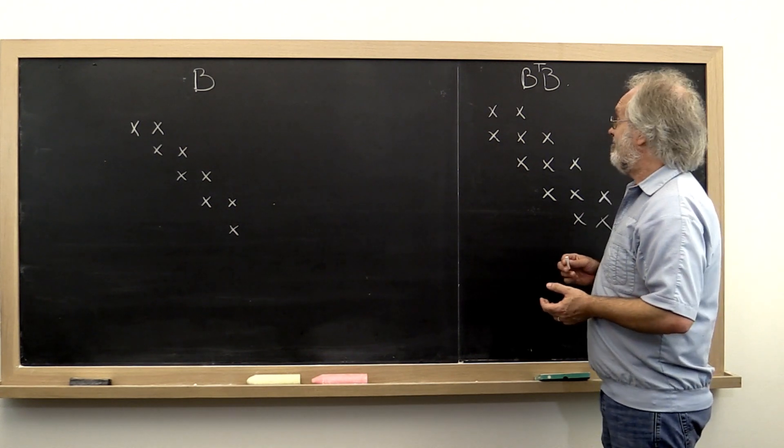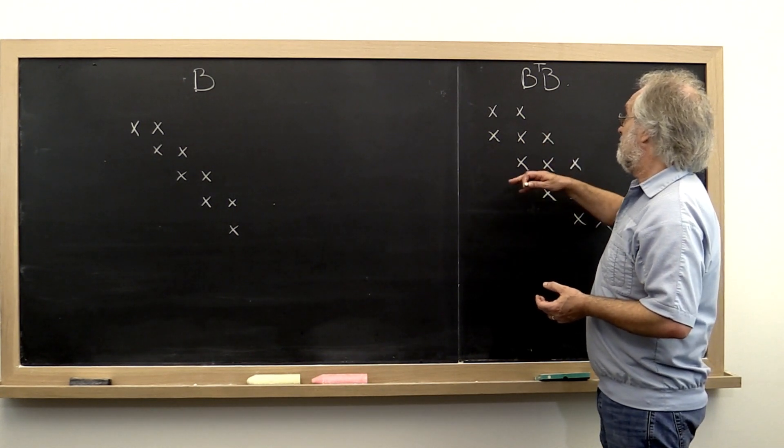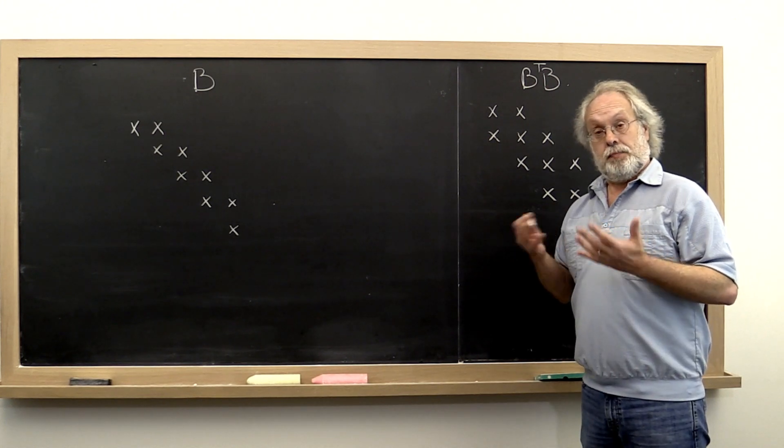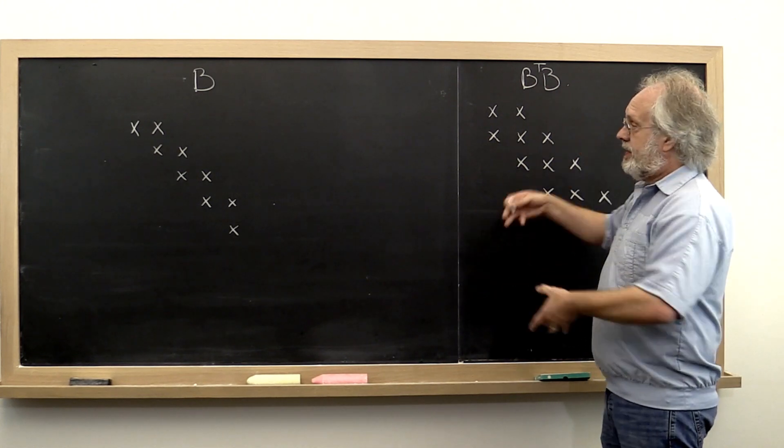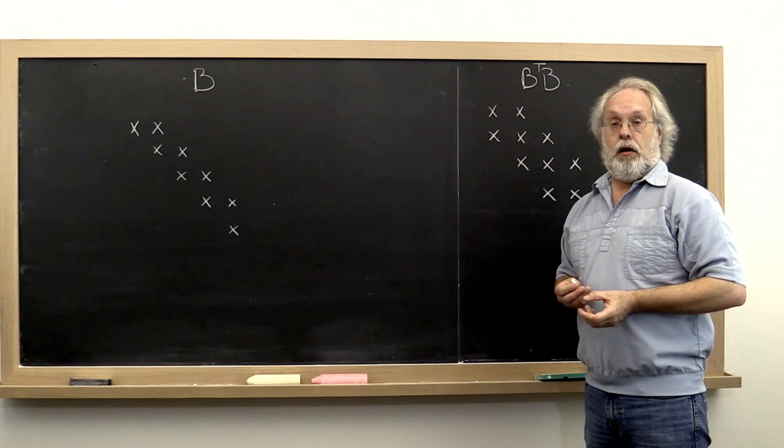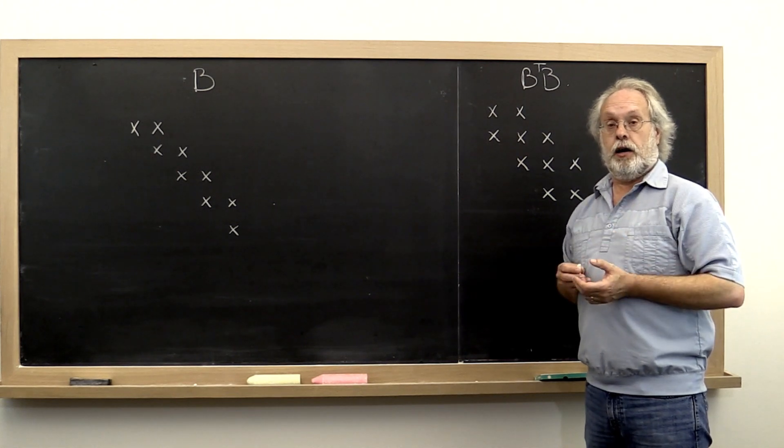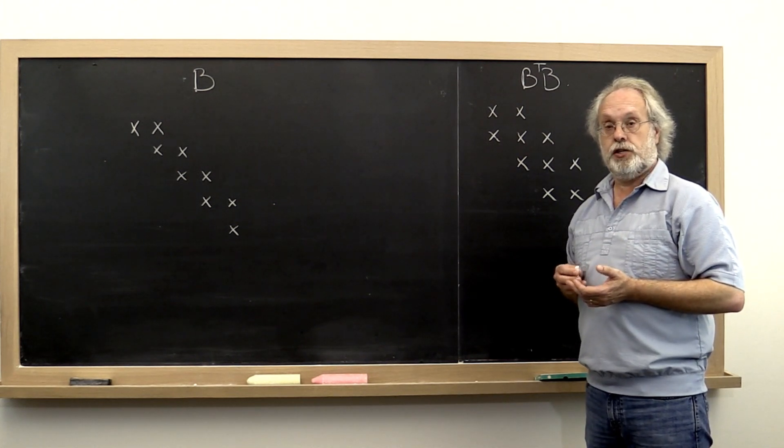But we don't really want to compute the spectral decomposition of it and then somehow kludge a singular value decomposition of our matrix B. So what to do?